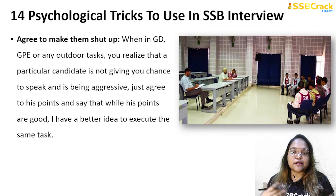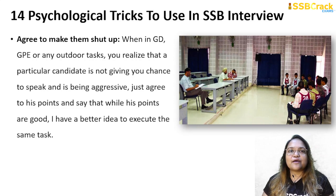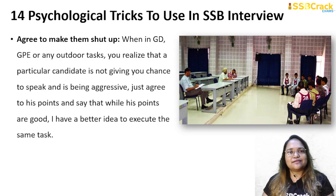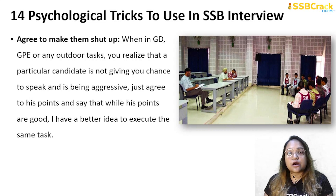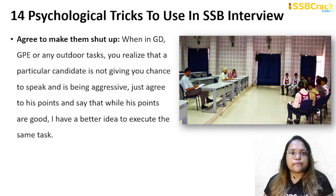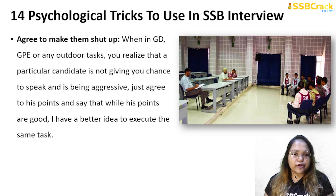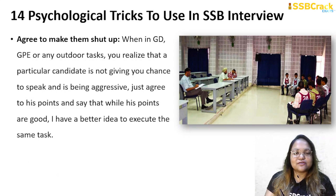The next trick is 'agree to make them shut up.' This is a very good psychological trick. If someone is accusing you and you suddenly start agreeing with them, that person will be shocked and their aggressive tone will come down. You can use the same trick in SSB — in group discussions or outdoor tasks. If a candidate is not giving you a chance to speak or is being aggressive, start agreeing with their points. Eventually they will feel a soft corner for you and automatically give you space to speak.